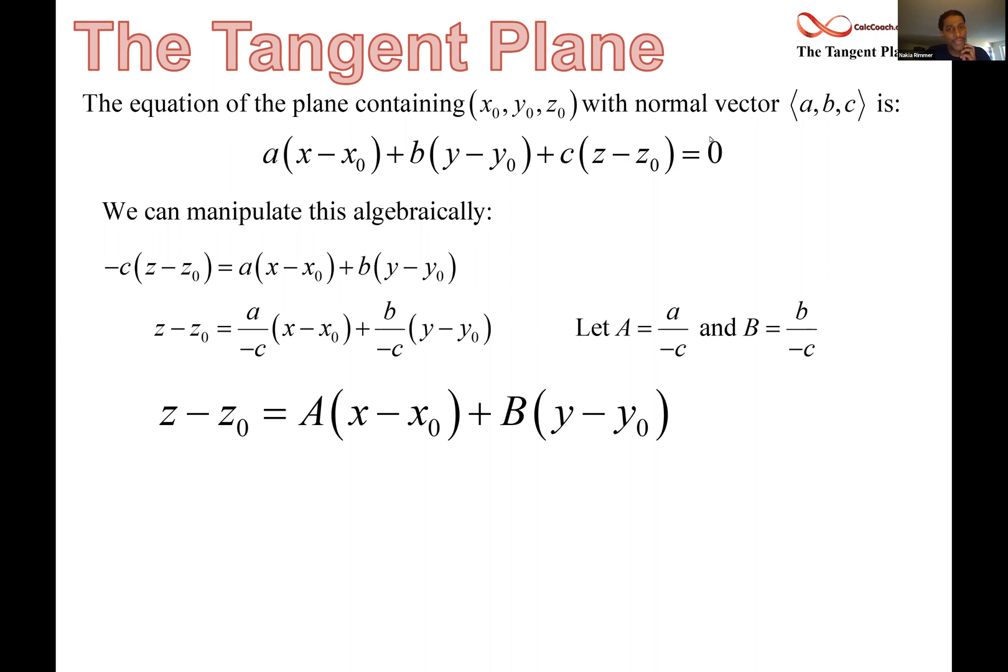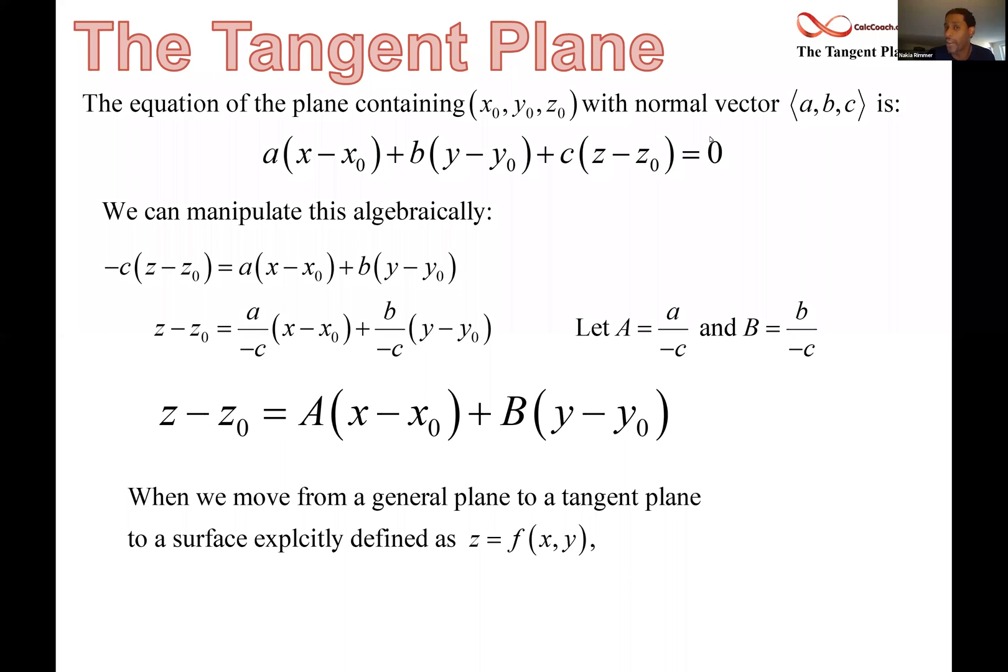And then more specifically, what we're going to do is focus on what if this is the tangent plane to a function at a particular point where the x naught, y naught, z naught is the point of tangency. Our job is to figure out what is this capital A and capital B in that format. Let's take a look at that on the next slide.